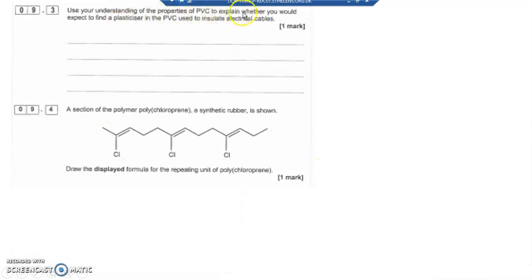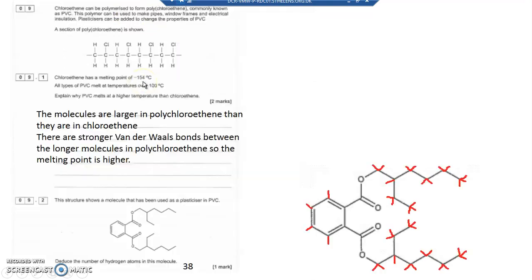Use your understanding of the properties of PVC to explain whether you'd expect to find a plasticizer in PVC used to insulate electrical cables. What a plasticizer does is it gets between the PVC molecules, so it gets in between the molecules.